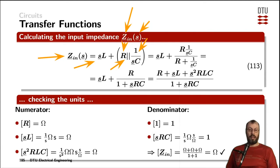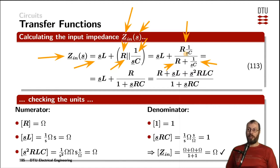The parallel connection of two impedances is the multiplication of the impedances divided by their summation. In this case, that is R multiplied by the impedance of the capacitance 1/(SC), divided by R plus 1/(SC). By multiplying that fraction by SC, we can simplify it to R divided by (1 + SRC). This result will occur very often whenever we have a resistor and capacitor in parallel.